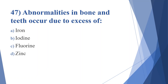Forty-seventh question: abnormalities in bone and teeth occur due to the excess of. Option A: iron. Option B: iodine. Option C: fluorine. Option D: zinc. Answer is option C, fluorine.